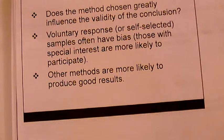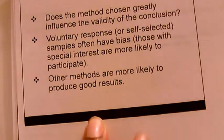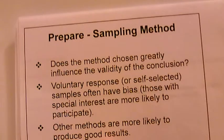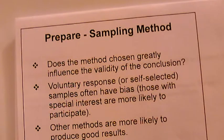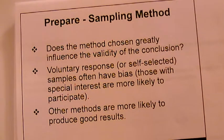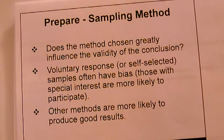Then you have to consider a sampling method. Ask yourself: does the method chosen greatly influence the validity of the conclusion? You want to choose a method that would make the conclusion a valid one. Avoid, at all costs, voluntary responses or self-selective samples, because they often have bias and those with special interests are more likely to participate.